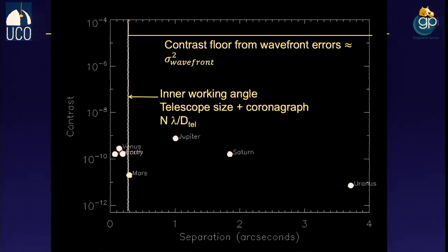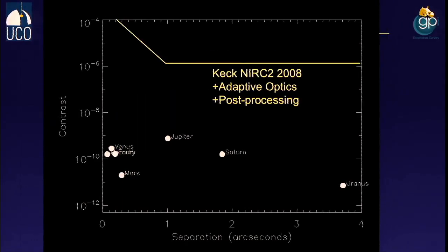Light comes from about 80 different things: diffraction from telescope spiders, the concentric Airy pattern from the finite telescope aperture, and lumps from polishing errors — in Hubble's case, from primary mirror errors — all of which completely swamp the signal from a hypothetical planet. This sensitivity floor is mostly set by wavefront errors, roughly proportional to wavefront error squared. The smallest angle at which you can see a planet is roughly set by your coronagraph design and telescope size — some scaling factor times lambda over the telescope diameter.